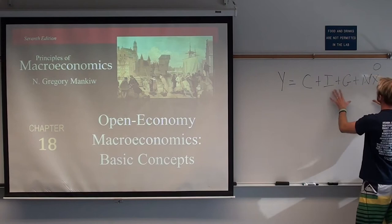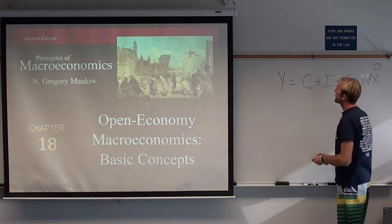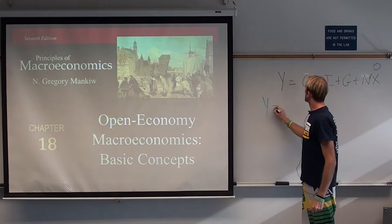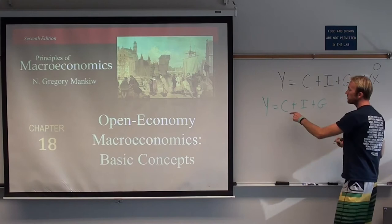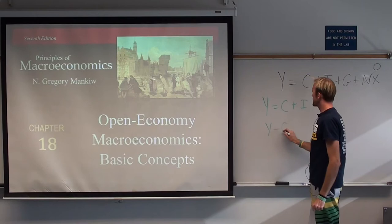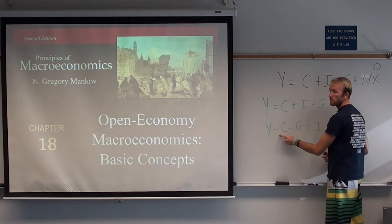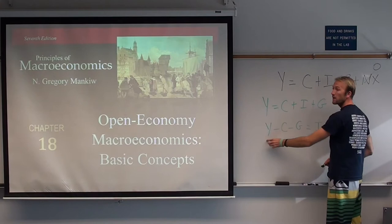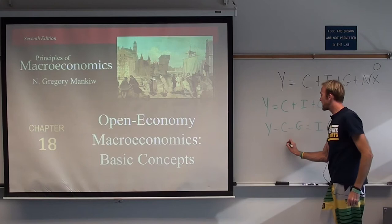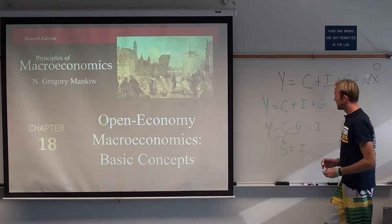In a closed economy, since net exports is zero, Y equals C plus I plus G. If we move consumption and government expenditures to the other side, we get Y minus C minus G equals investment. Total income minus any expenditures — this is total income of our country, minus what we consume, minus what the government spends. This is known as our savings.